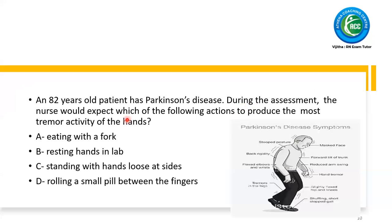An 82-year-old client has Parkinson's disorder. During assessment, the nurse would expect which of the following actions to produce the most tremor activity of the hand. In case of Parkinson's disease — it's a neurological, neuromuscular disease — what is the exact reason? Parkinson's disease is due to deficiency of dopamine. Deficiency of dopamine can cause Parkinson's disease.